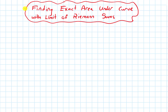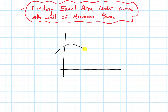In this video, we'll talk about how to find the exact area under a curve with a limit of Riemann sums. I'm going to begin by drawing a picture, some axes, and then a curve which I'll call y equals f of x. I'm going to label some interval here from a to b.